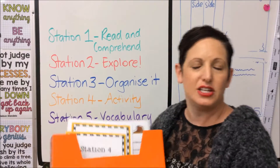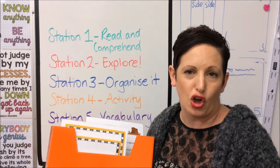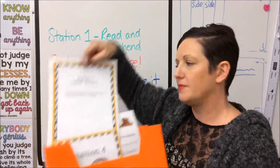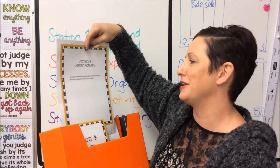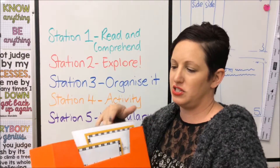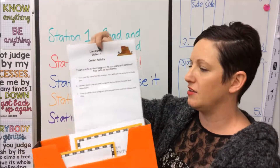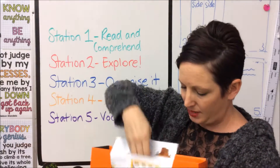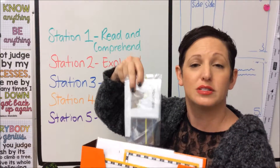Station four is the activity set station — that's the one I will usually work with a group of students. The instructions say to follow the directions for that week's activity, so each activity might be a little bit different. This one is about creating a Venn diagram with the resources already in the box, so follow my instructions when you get to this one.